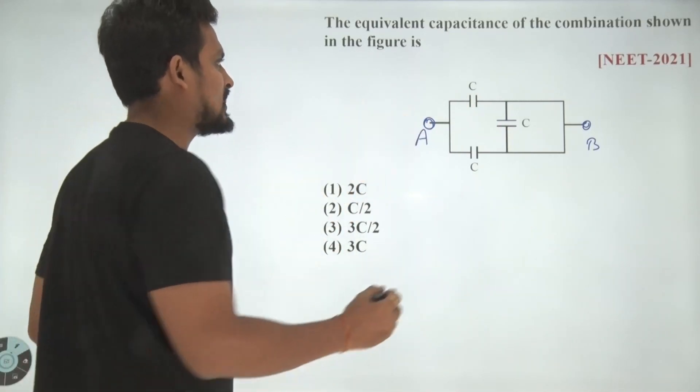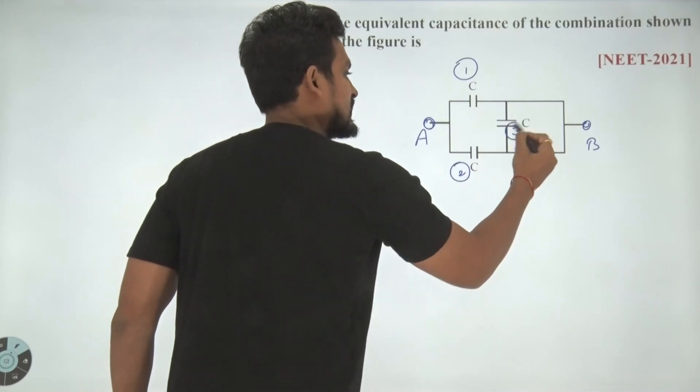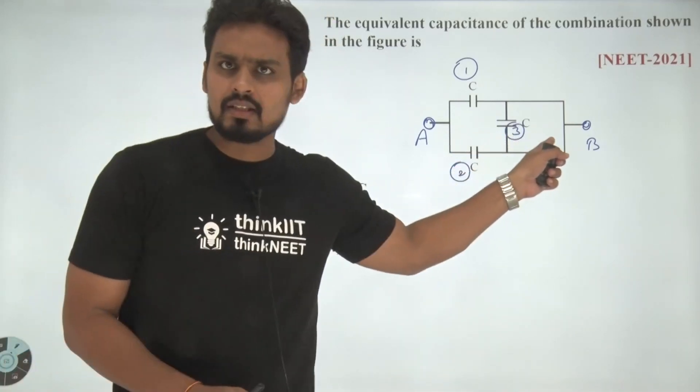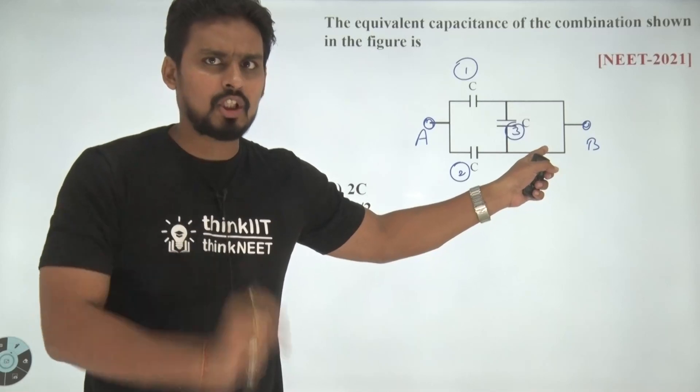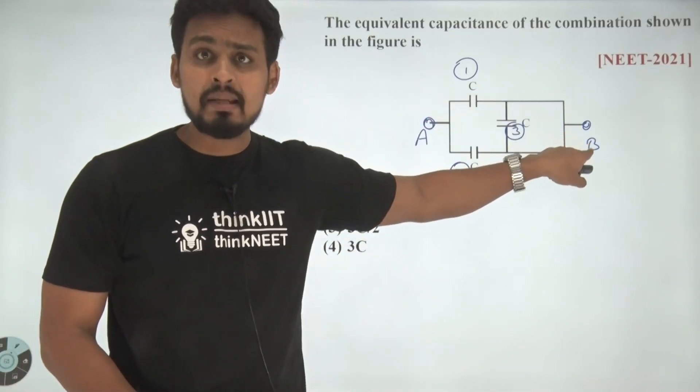We need to find out the equivalent capacitance across A and B. Let us call this as 1, this as 2, and this as 3. So the third capacitance is having zero potential difference. Why is it so?